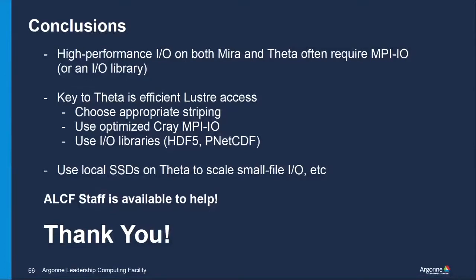To wrap up: the takeaways are that high performance on both Mira and Theta require MPI-IO or a higher-level library — that's what is recommended. If you want good performance on Theta, choose your striping appropriately. Use Cray-MPIO and play with optimizations, or use a higher-level library and play with different flags. If you have a lot of small files or data that fits on SSDs and it's worth it to you, you might be able to get better performance using them.